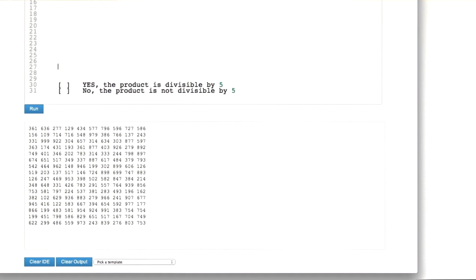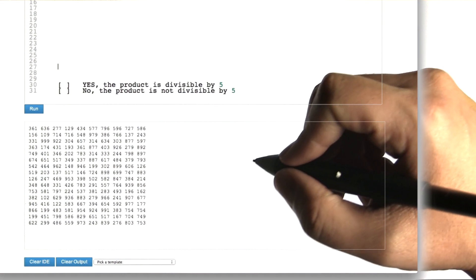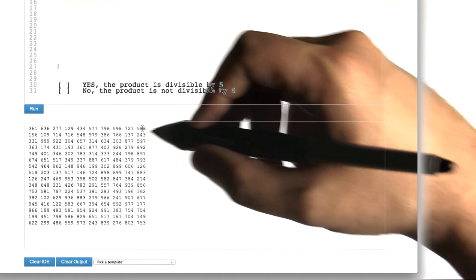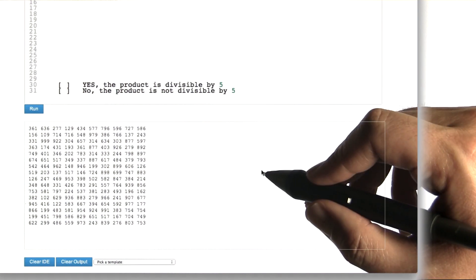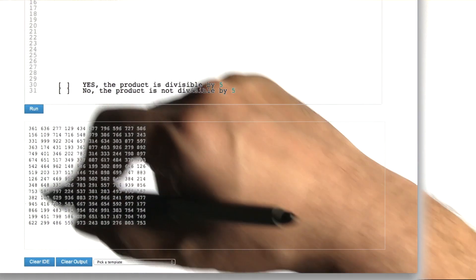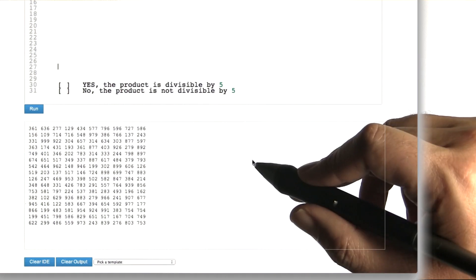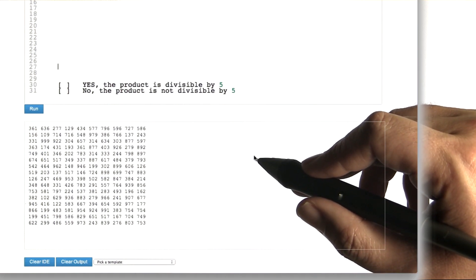But before we begin, we're going to try another little magic trick. Here's a block of numbers that I mostly randomly generated, a bunch of three-digit numbers, and I want you to figure out as quickly as you can whether the product of all these numbers is divisible by 5 or if it's not divisible by 5.